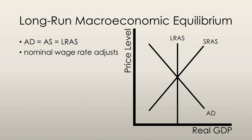Long-run macroeconomic equilibrium occurs when real GDP equals potential GDP. That's where long-run aggregate supply, short-run aggregate supply, and aggregate demand all intersect at the same point.